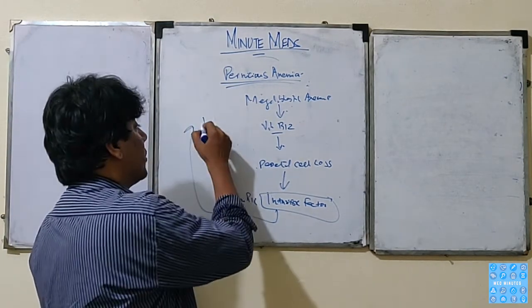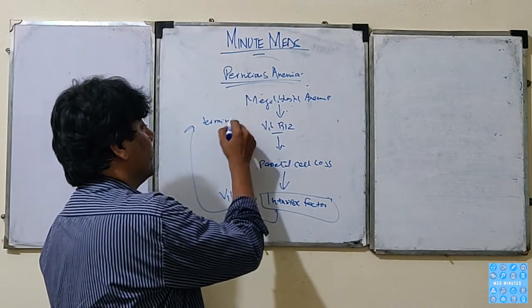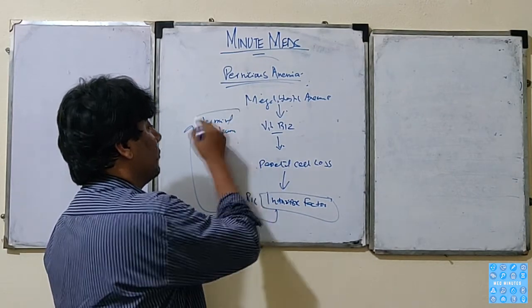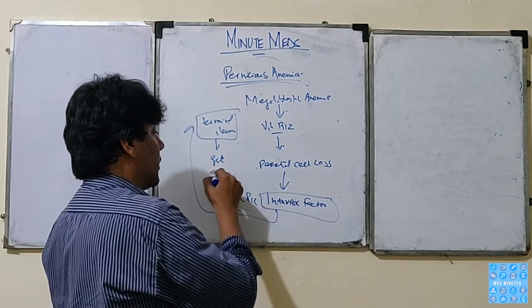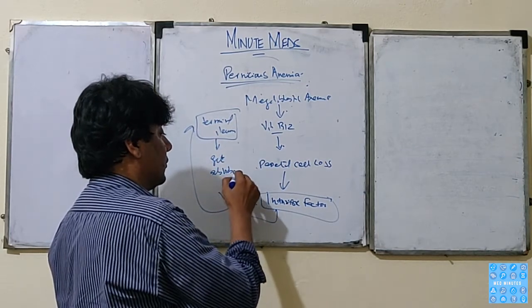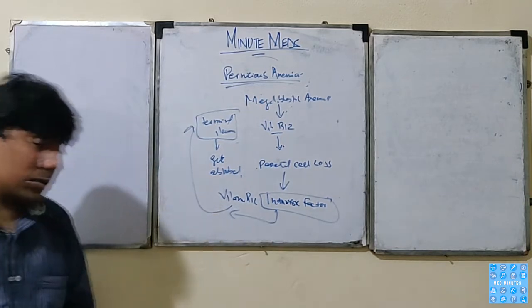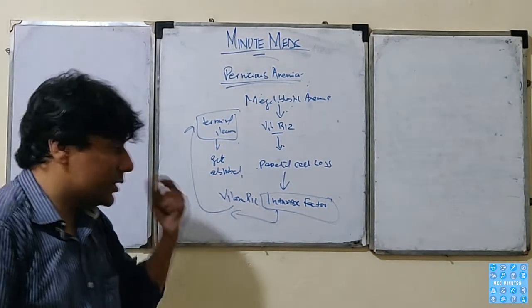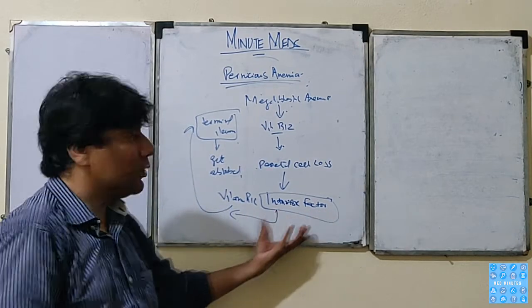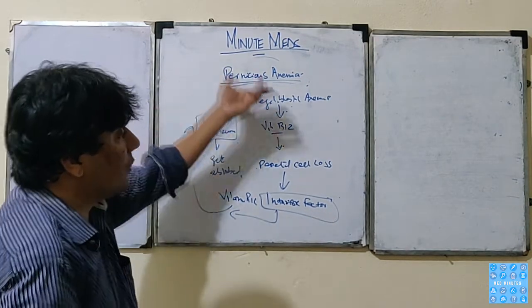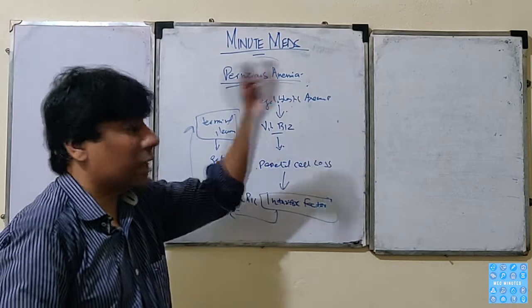Actually, this intrinsic factor is needed. This intrinsic factor takes vitamin B12 to the terminal ileum and gets absorbed. So any disease that can cause deficiency of this factor would lead directly to the deficiency of vitamin B12, then megaloblastic anemia.